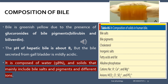The solids in human bile include: bile salts, bile pigments, cholesterol, lecithin, inorganic salts, fatty acids, fat, alkaline phosphatase, cations like sodium, potassium, calcium, magnesium, and anions like bicarbonate, chloride, sulfate and phosphate. The composition of bile is very important — you need to memorize the composition of bile.